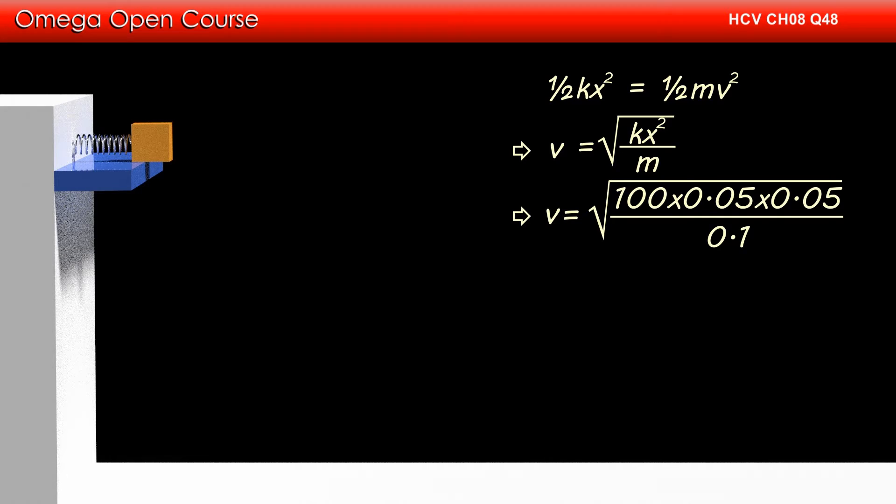Putting the values of k, x and m, we get v is equal to root under 100 into 0.05 into 0.05 divided by 0.1. Simplifying, we get v is equal to root under 2.5.